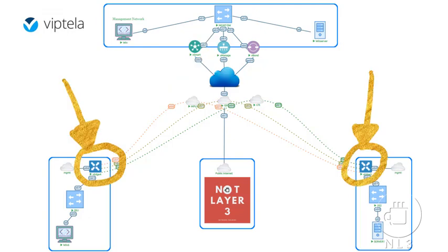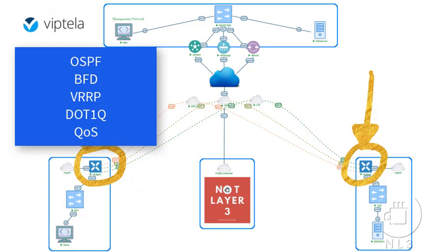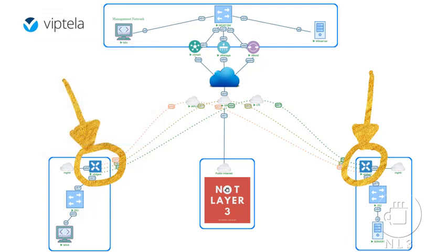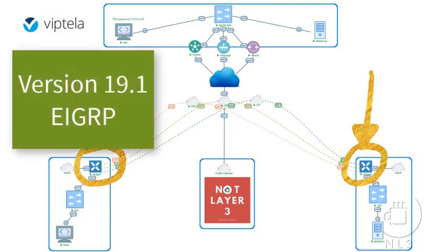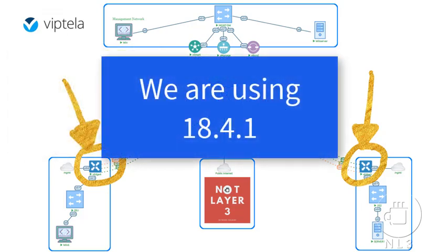The fourth and final component is the vEdge or cEdge. When I say vEdge, I mean a Viptela device or Viptela software, while cEdge identifies Cisco native products running the SD-WAN code. The edge router can be deployed as a hardware or software device — it's your data plane or forwarding component. vEdges and cEdges support typical routing and switching functions such as OSPF, BFD, VRRP, 802.1Q, and QoS, to name a few. In newer versions of Viptela code, vEdges and cEdges also support EIGRP. For the purposes of this channel, we will be sticking with Cisco's recommended 18.4.1 code, which will be used exclusively on all upcoming certifications.